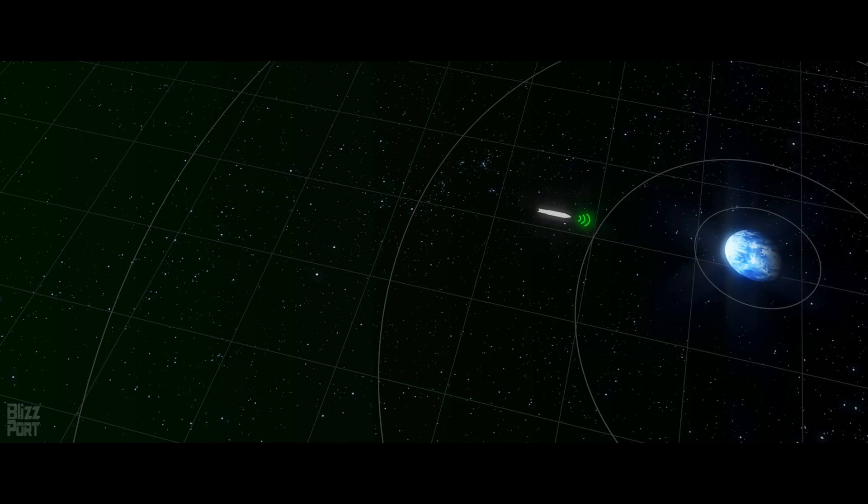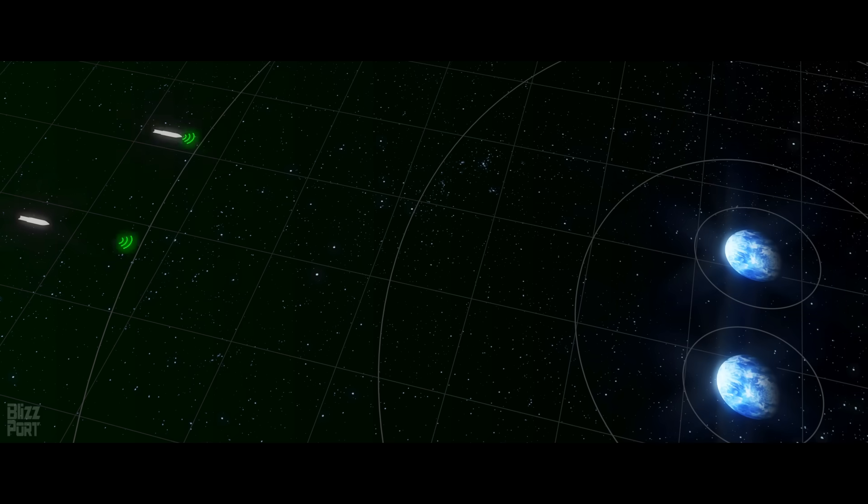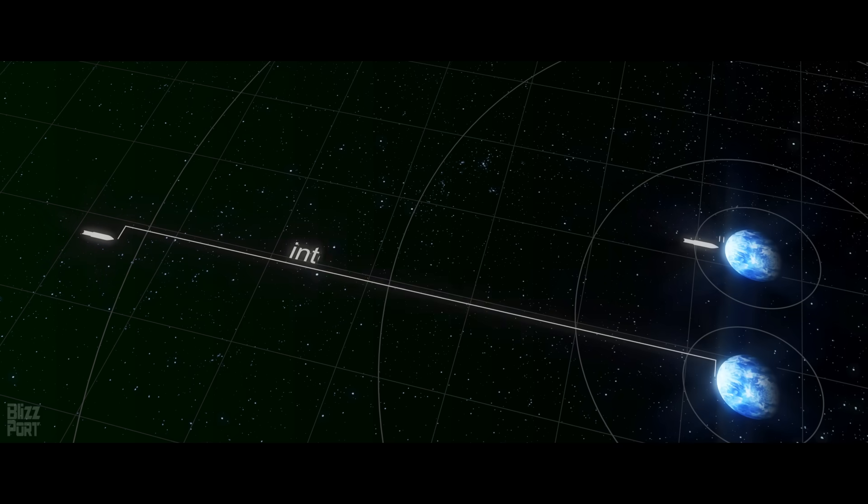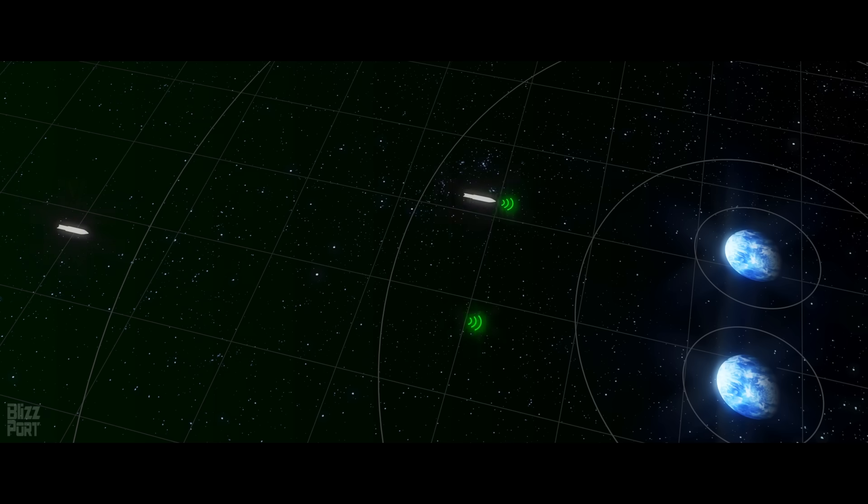On the other hand, for an external observer, a relativistic missile and its signal travel at nearly identical velocities. As a result, when the signal arrives at the target, the relativistic missile is only nanoseconds behind.